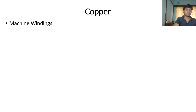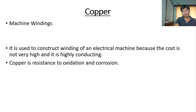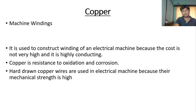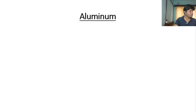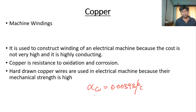Now let's discuss copper as an important conducting material. Copper is used for machine winding because its cost is not very high and it is highly conducting. Second, copper is resistant to oxidation and corrosion. Third, hard-drawn copper wires are used in electrical machines because their mechanical strength is high. The temperature coefficient of copper is 0.00393 per degree Celsius.